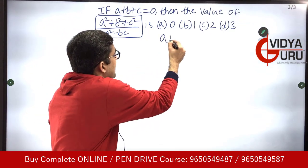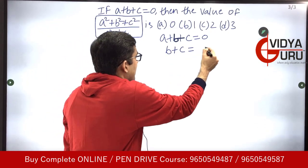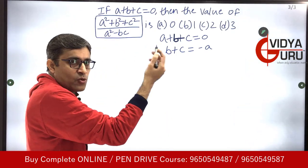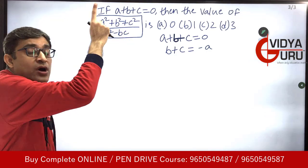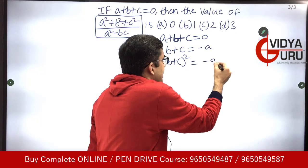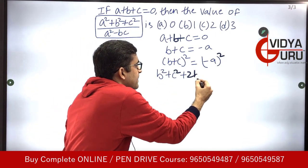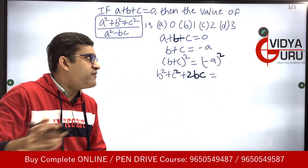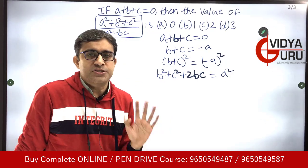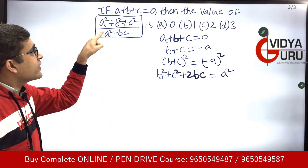We have a + b + c = 0, so b + c = -a. Now I'll square both sides to get power 2. Squaring gives (b + c)² = (-a)², which expands to b² + c² + 2bc = a², since the square of a negative value is positive.